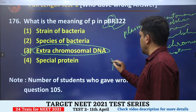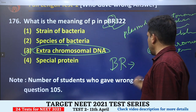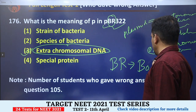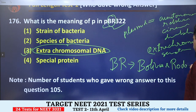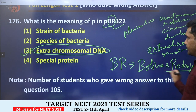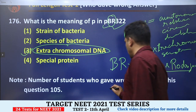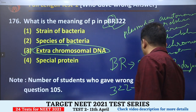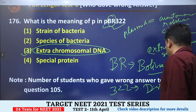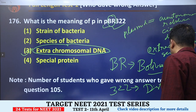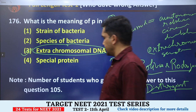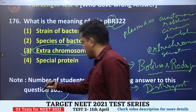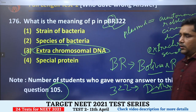B and R in pBR322 stand for the scientists who created it — Bolivar and Roderick's. The number 322 was assigned to distinguish this vector from other vectors they had previously constructed. Total students who got this wrong: 105.